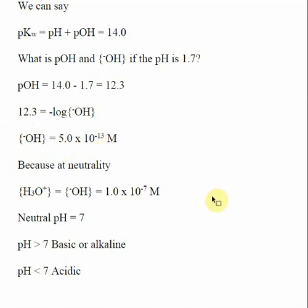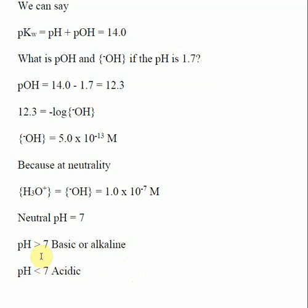Now that we understand pH, remember when we talked about KW — in pure neutral water, there is a given concentration of hydronium and a given concentration of hydroxide, and they are both 1.0 times 10 to the minus 7th. If you find the pH of this value, you get a pH of 7. That's where the idea of neutrality comes from: in a neutral solution, the concentration of hydronium is 1 times 10 to the minus 7th, giving a pH of 7. When the pH is less than 7, the concentration of hydronium is greater than hydroxide and we define this as acidic. When the pH is greater than 7, the concentration of hydroxide is greater than hydronium, and we consider this basic or alkaline.